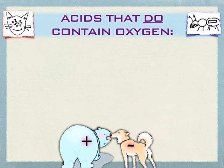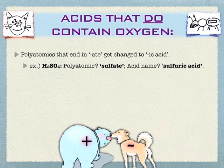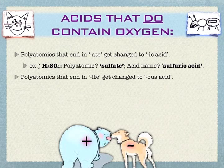If your acids do contain oxygen, then you're dealing with some kind of polyatomic. What we're going to do is take the endings -ate and -ite and swap those out for endings you've seen before: -ic and -ous. Polyatomics that contain -ate get changed to -ic acid; everything else stays the same. For instance, the classic acid sulfuric acid comes from the polyatomic sulfate — take off the ending -ate and swap it out with -ic acid. Since sulfate has a negative 2 charge, we needed two hydrogens. A lot of people remember this by thinking 'I ate something icky' — that way you remember -ate goes with -ic. And once you remember that, then -ite gets stuck with -ous.